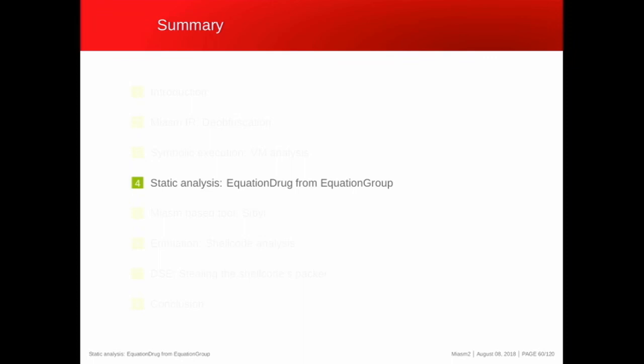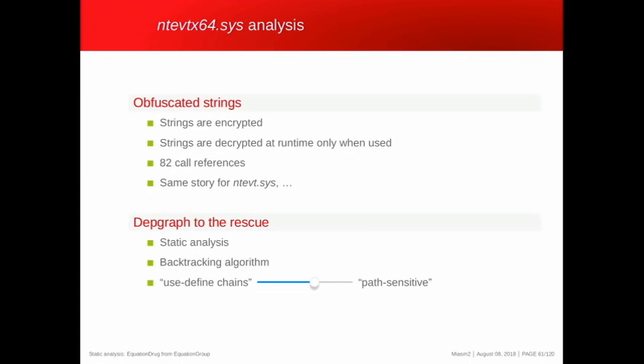Another application is analyzing the Equation Group malware. In that binary the strings are all encrypted: each time the binary needs a string, it deciphers it in memory, uses it, and wipes it afterward. For static analysis you would manually find the deciphering function, trace cross-references, recover the pointer to the cipher string, the length, and process them — a tedious task. We will show how to automate this using a dependency graph algorithm — somewhere between a use-def chain and a path-sensitive chain, capable of handling loops.